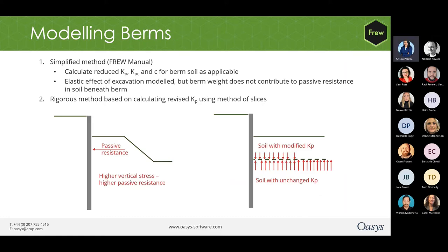Moving on to modeling of berms. In FRU, a berm is modeled similar to a uniform layer of soil as the behaviour is the same in the elastic face. The horizontal forces at the wall are transferred downwards by shear. In the analysis, the user should propose modified values of KP, KPC and C from which passive pressures within the berm are calculated. At the level of the base of the berm, a negative UDL surcharge is applied. At the same level, a positive strip surcharge is also applied representing the berm itself. So where the berm is not present, the negative surcharge will act alone. This is a simplified method, but a more rigorous method is also available — both are described in detail in the manual.